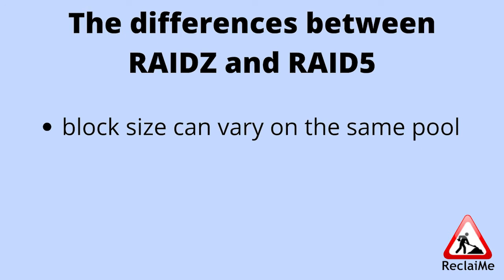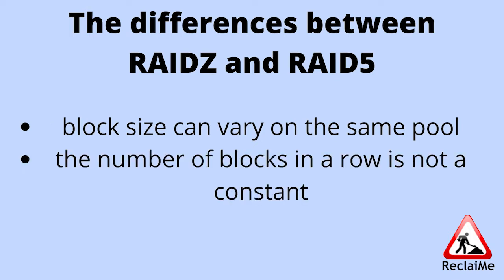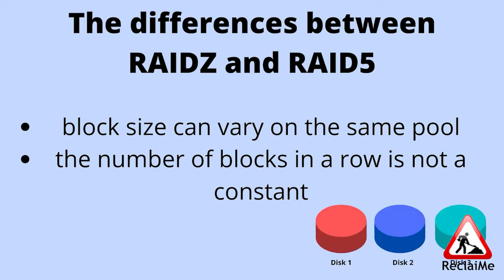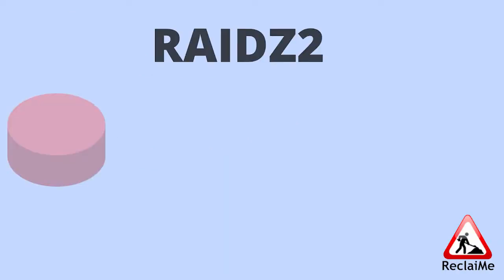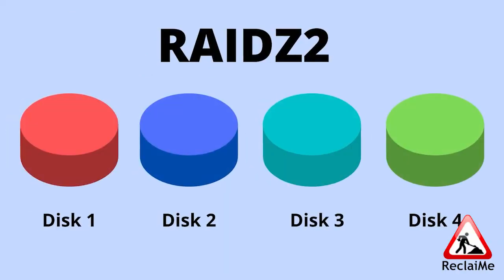Block sizes can vary in the same pool from a sector to several kilobytes. The number of blocks in a row is also not a constant, and depends on the number of data blocks involved in a particular single RAID operation. RAIDZ2 pool is like a RAID6, but has the same differences as RAIDZ1 to RAID5.